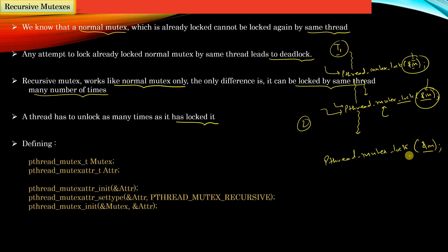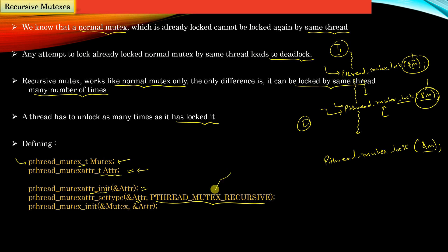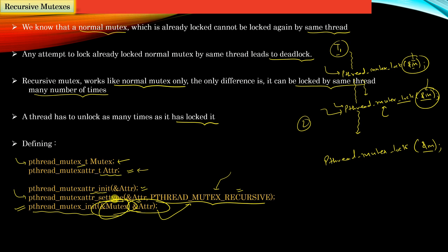To declare a recursive mutex variable, we use the same data type pthread_mutex_t. The difference is that we need to define an attribute variable to state that this particular mutex is recursive. Initialize this attribute variable using pthread_mutexattr_init, then set the recursive property using the constant PTHREAD_MUTEX_RECURSIVE in the pthread_mutexattr_settype API. Using pthread_mutex_init, we can bind the attributes to our mutex, making it recursive in nature.